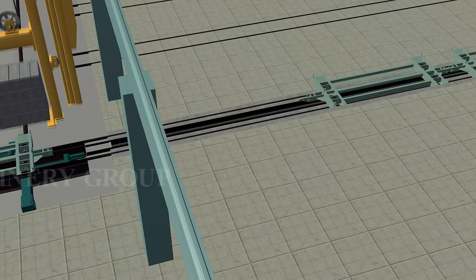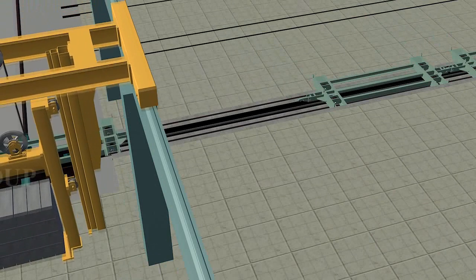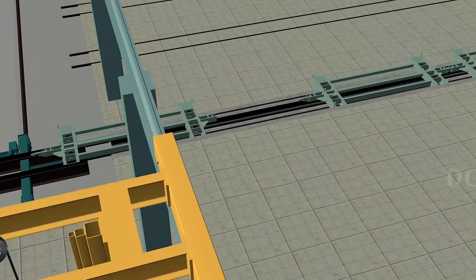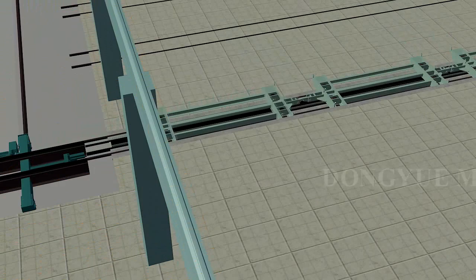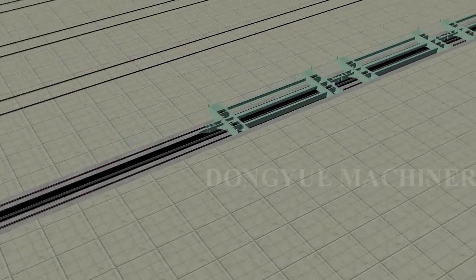At the same time, Steam Trolley returns in front of Autoclave through Steam Trolley Recycle Rail and prepares for carrying new block.